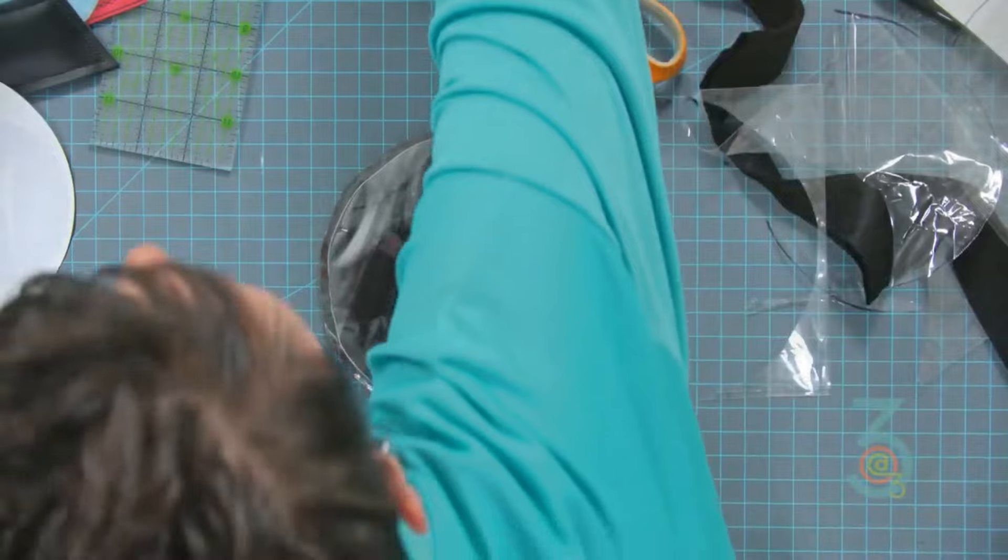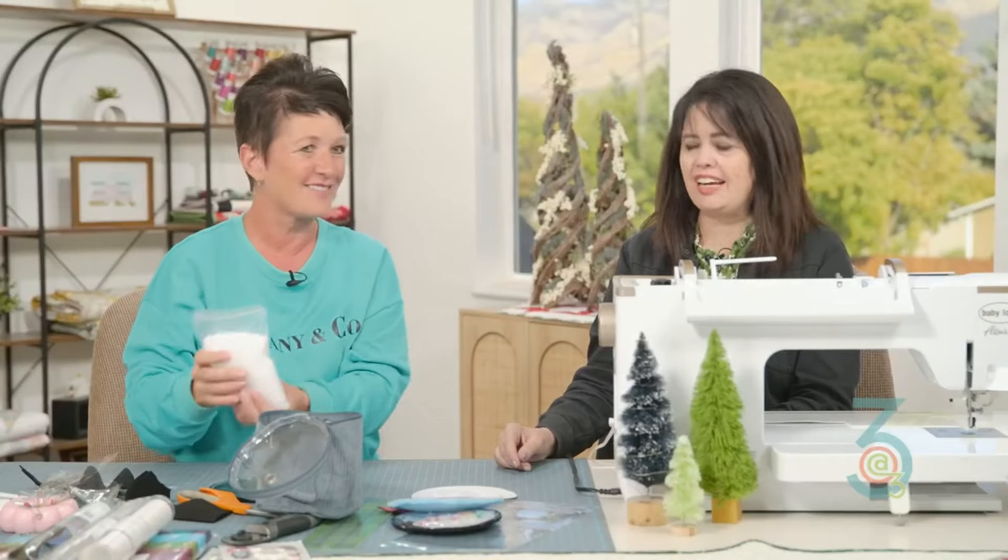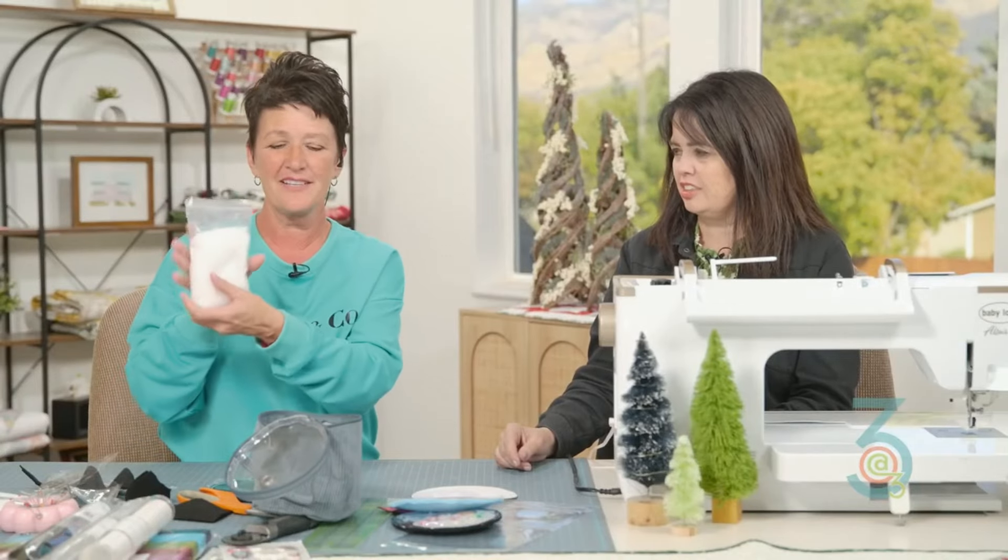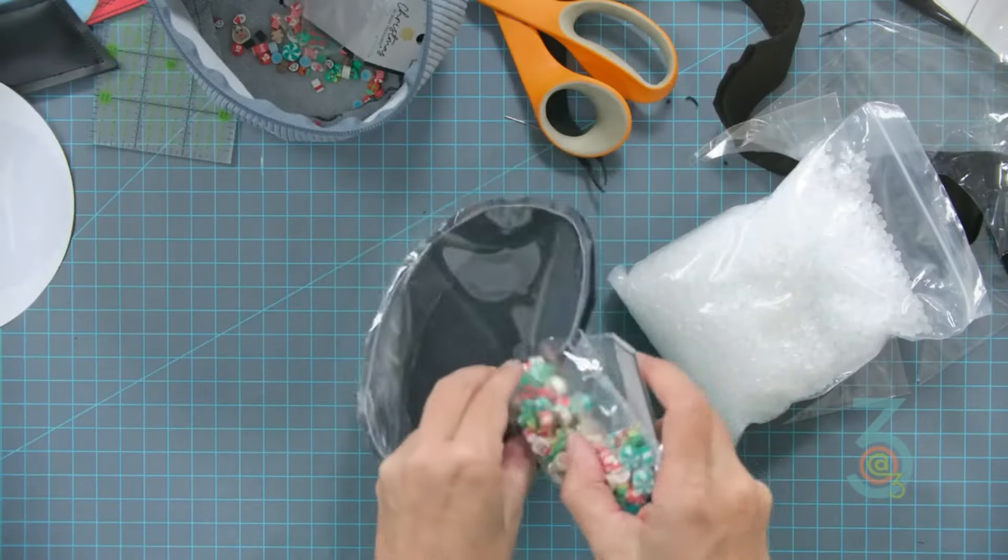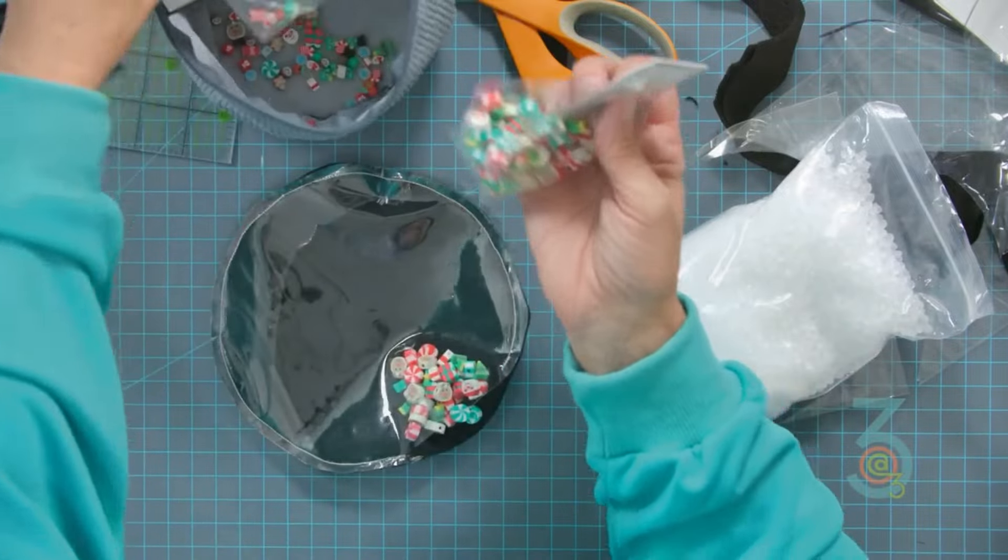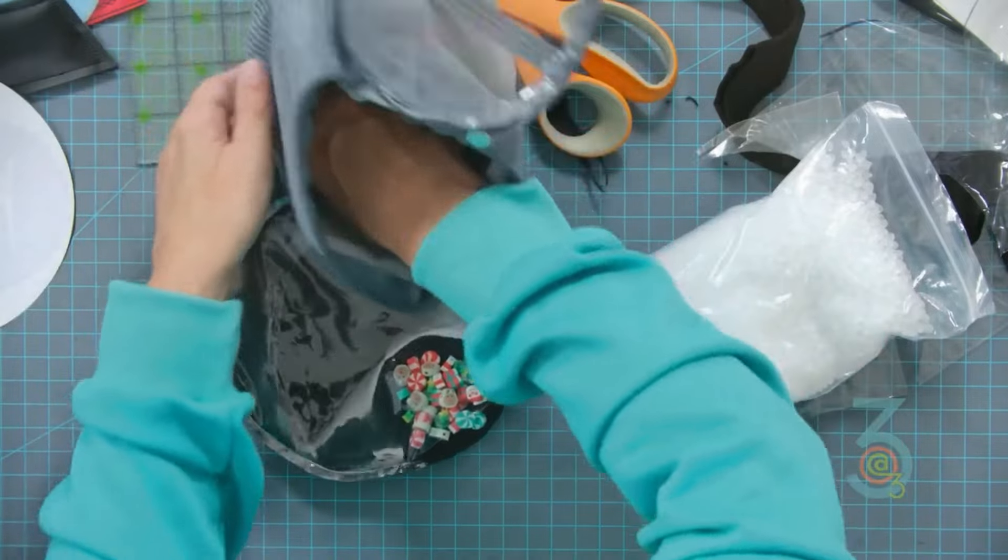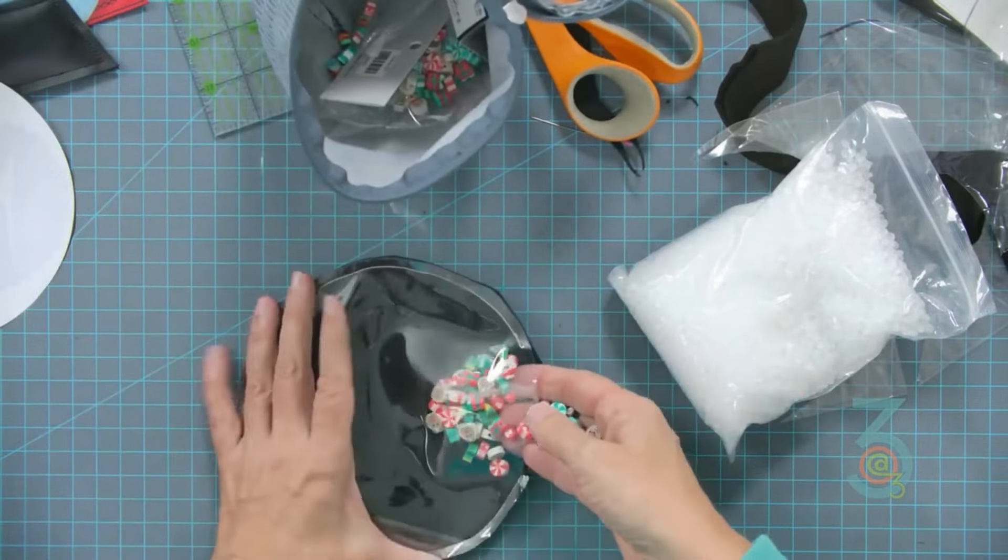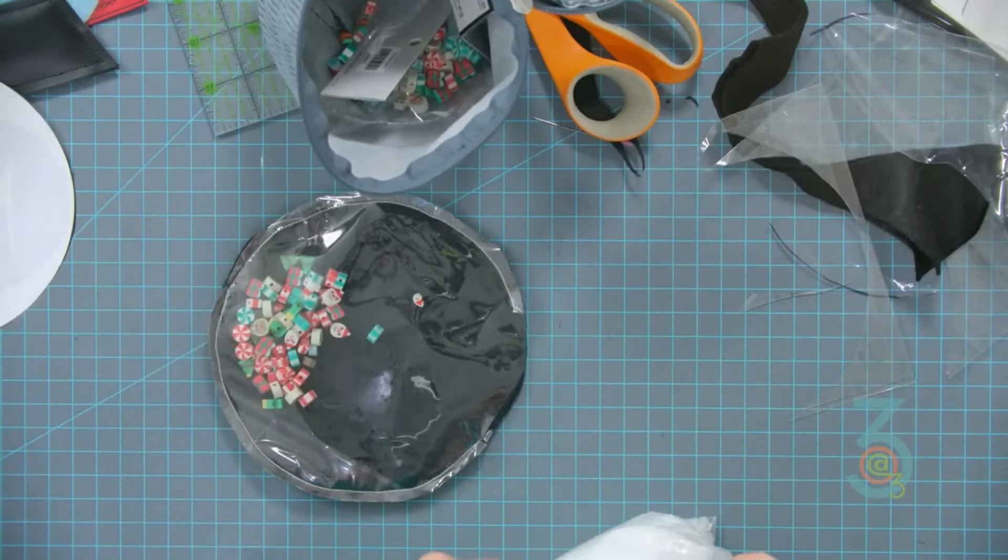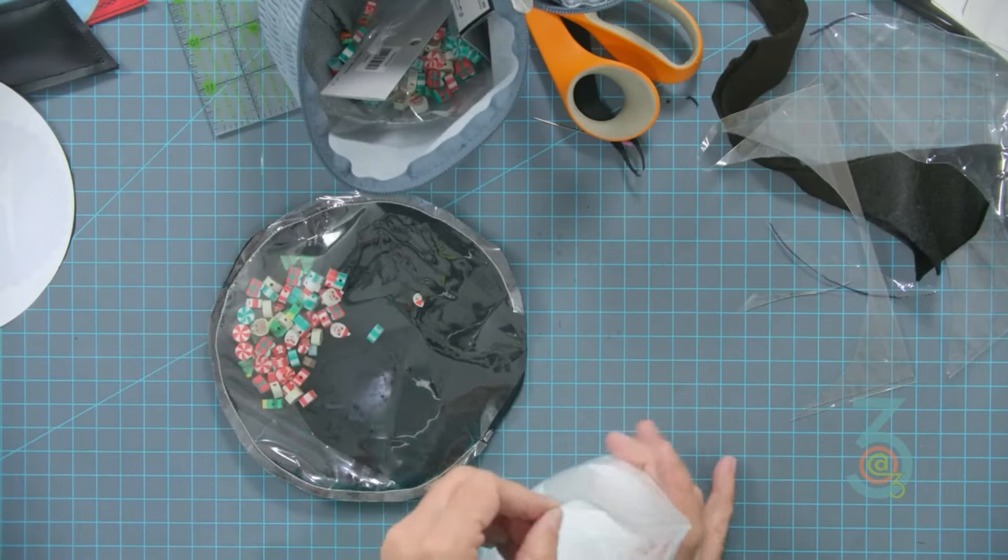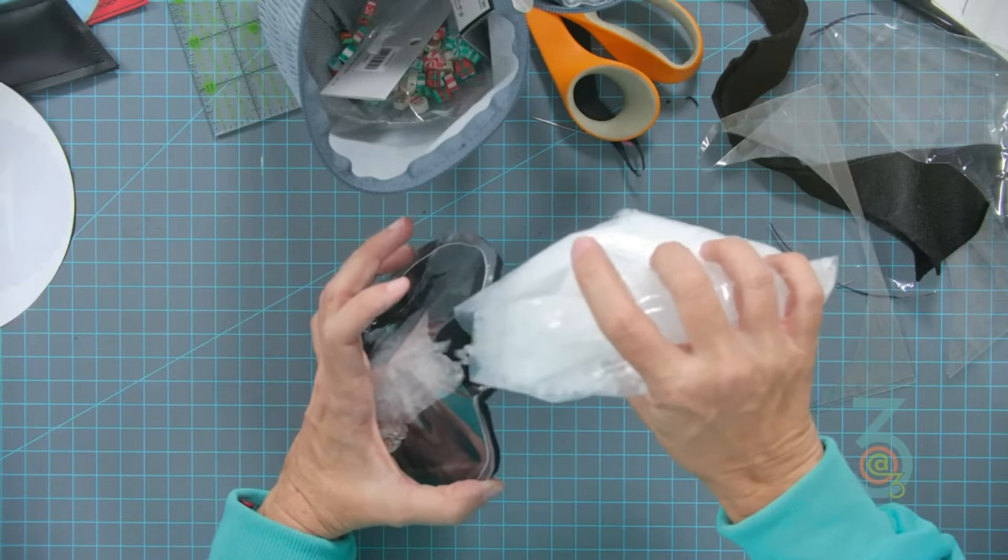Once you have that done, we're going to fill it. All I used were poly pellets for our snow. Poly pellets for the snow and then we have all kinds of fun little buttons and doodads. I'm just going to slide all this in here. You could also create like a little funnel if you wanted to so you didn't have those going all over the place.